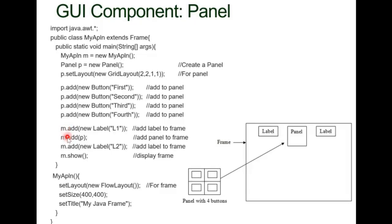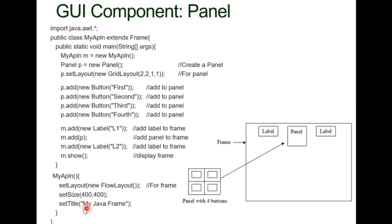After adding buttons to the panel, we use m — which is the object of MyAppln — to do m.add(new Label("Label 1")), placing Label 1. Then we add the panel p inside the frame using m.add(p, "Label 1" location). Next, Label 2 is added, then show() is called to display the window. We also set the layout to FlowLayout, set the window size to 400x400, and set the frame title to 'My Java Frame'.